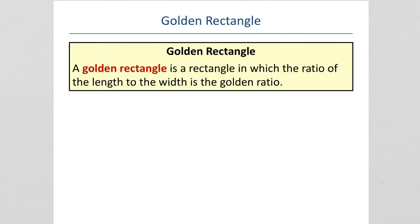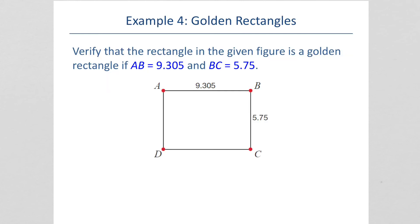A golden rectangle is a rectangle in which the ratio of the length to the width is a golden ratio. Verify that this rectangle is a golden rectangle. So, the length divided by the width, that would be 9.305 divided by 5.75. We want to see, is that approximately 1.618261? And yes, it is. So, this is considered a golden rectangle.